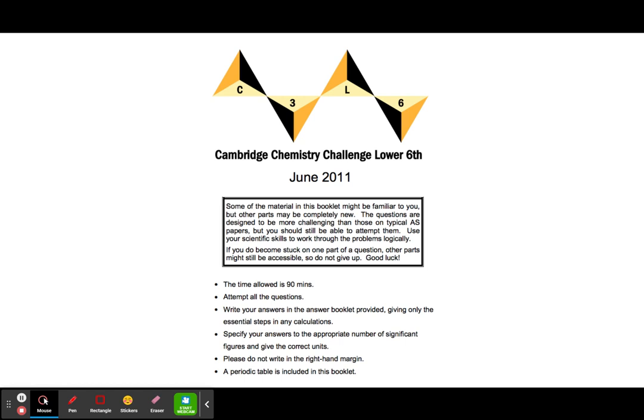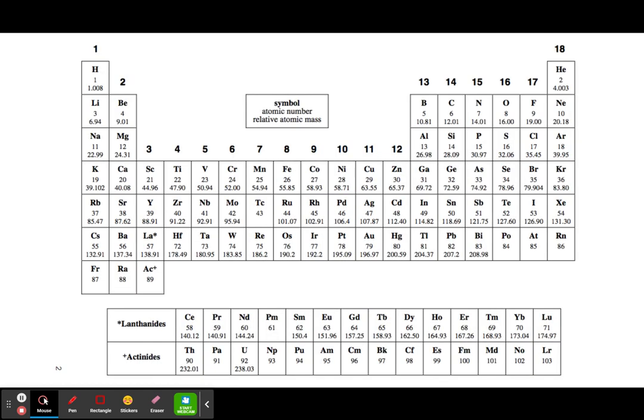Hello, today we're going to be going through the 2011 past paper for the C3L6 Cambridge Chemistry Challenge. This has a lot of organic chemistry and quite a lot of stuff to do, so let's just crack on with it. As you can see, this is the regular periodic table but you've got to be careful because it has extra decimal places, so we've got to use that whenever they ask us.